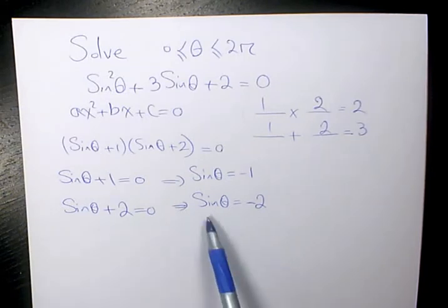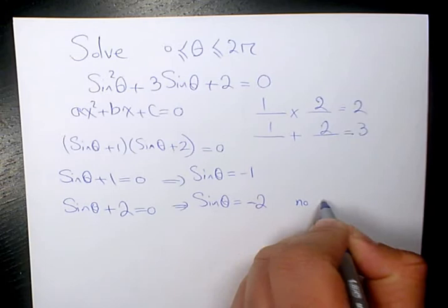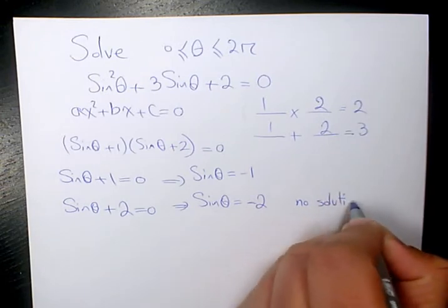So here, in the second part, you see sine theta equals to negative 2, which is not going to be possible, and there is no solution to this expression. So here, we have no solution because that's negative 2.